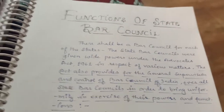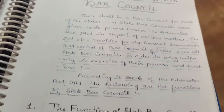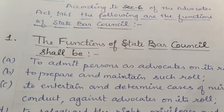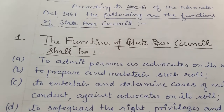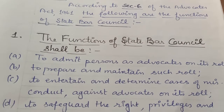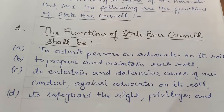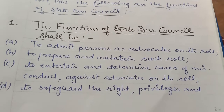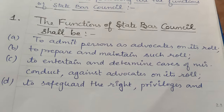So, we can tell you about the functions of State Bar Council, which are performed by Section 6 of the Advocates Act 1961. The following are the functions of the State Bar Council. Number 1: the functions of the State Bar Council shall be — to admit persons as an advocate on its roll.